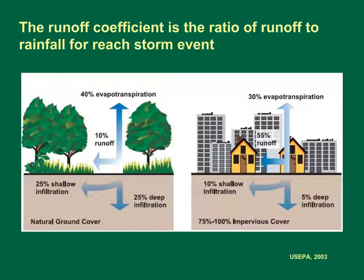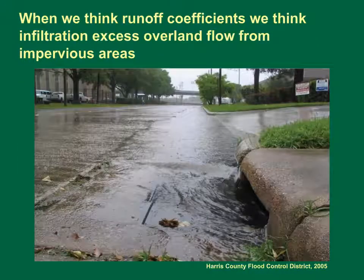The runoff coefficient is the ratio of runoff to rainfall for each storm event. During each rainstorm, some water is absorbed, some fills surface depressions, some evaporates, and some infiltrates. The remaining water runs off into natural or man-made channels which drain to the receiving stream. As this cartoon indicates, the proportion of runoff is expected to increase with increasing imperviousness. When we think of runoff coefficients, we think of infiltration excess overland flow from impervious areas.